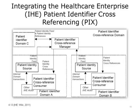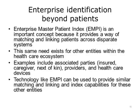If you are selecting an EMPI product, it might be a good idea to ensure that they conform to the IHE PIX and PDQ profiles. The Enterprise Master Patient Index is an important concept because it provides a way of matching and linking patients across disparate systems. The same need exists for other entities within the healthcare ecosystem, including people or organizations associated with a patient, like the insured, the caregiver, or their next of kin. Providers are another important entity that need to be tracked across systems, and healthcare devices might be another example. Technology like EMPI can be used to provide similar matching, linking, and index capabilities for these other entities.